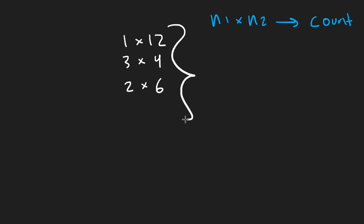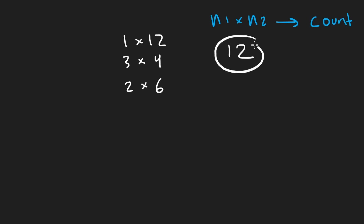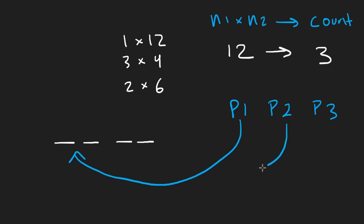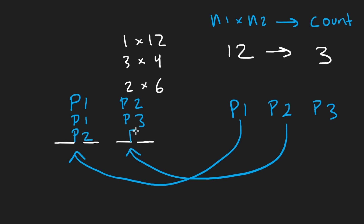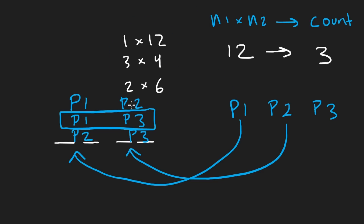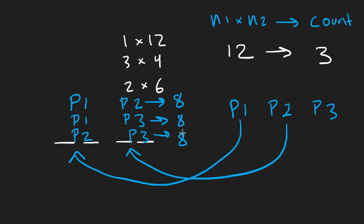What if the count is three? We'd have three pairs — P1, P2, P3 — and we can form pairs: P1&P2, P1&P3, P2&P3. Each of those satisfies the equation, giving eight tuples each, for a total of 24. The guarantee that all input numbers are distinct means all three combinations are truly different. So a count of 3 yields three equations, and a count of 4 yields six equations — each earning eight tuples.